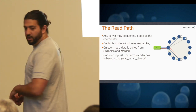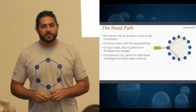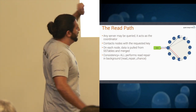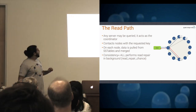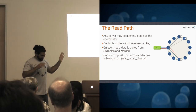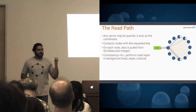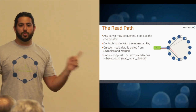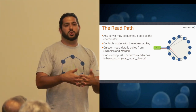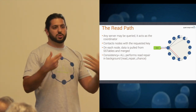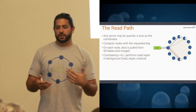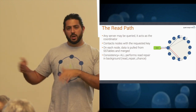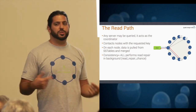Now let's look at the read path. It's the same idea as the write path — any server can act as a coordinator, and if you have token-aware enabled, it will go to the right node. The same row or partition can be across multiple SS tables — all merged together. Because of the nature of SS tables, you're going to have to do a minimal number of seeks. Even if you've stored a thousand things, they might be spread across a handful of SS tables, so those reads are still going to be fast.